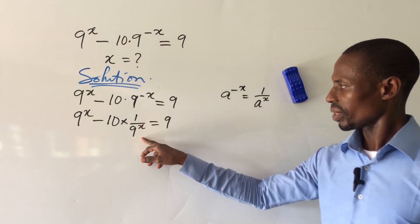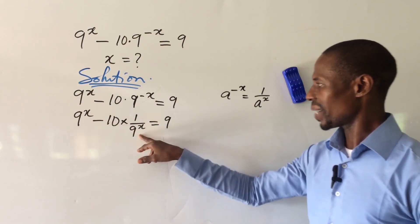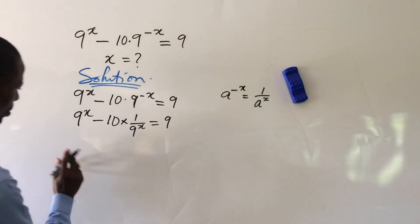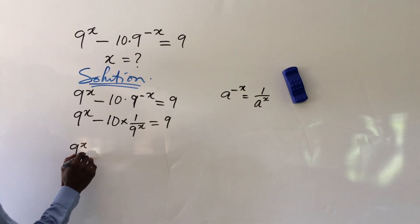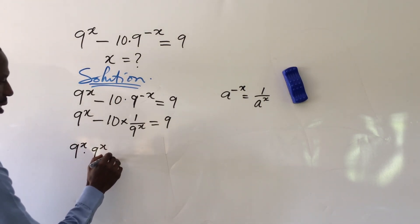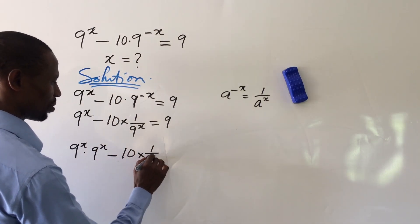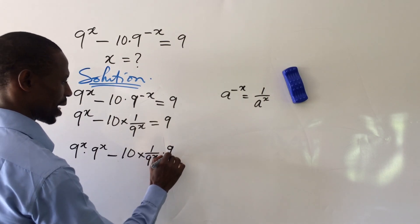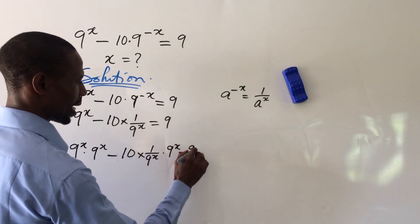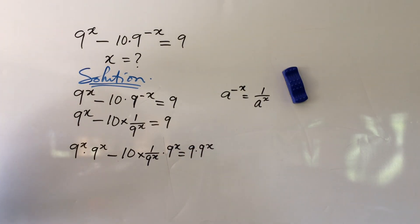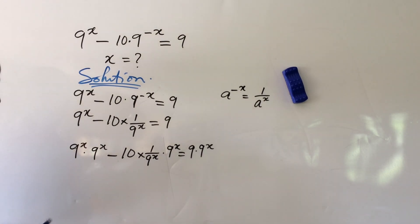We're now dealing with a fraction, so we multiply everything by 9 to the power of x. This gives us 9 to the power of x times 9 to the power of x, minus 10 times 1 over 9 to the power of x times 9 to the power of x, equal to 9 times 9 to the power of x. Note that the dot here means multiplication.